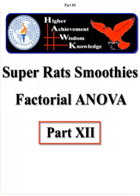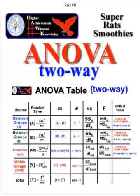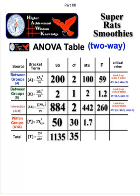Super rat smoothies factorial ANOVA part 12, two-way ANOVA. There's your raw data, there's your two-way ANOVA table. So we're almost done. We calculated everything all the way down to the F ratios, right? These are the calculated F's.